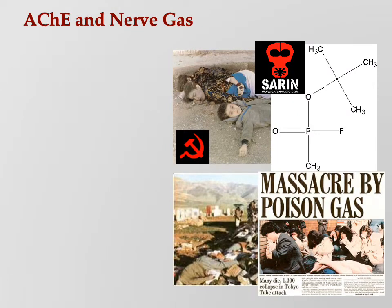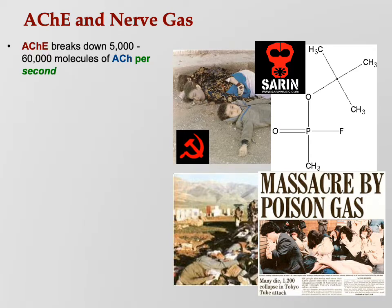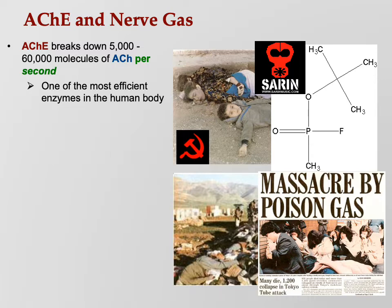We've been talking about the neuromuscular junction. One way to understand how it works is to see what makes it not work. Acetylcholinesterase breaks down 5,000 to 60,000 molecules of acetylcholine per second — it's one of the most efficient enzymes in the human body. The moment acetylcholine gets released from the vesicles of the synaptic knob or terminal bouton, acetylcholinesterase starts breaking them down, because you only want muscle contraction to last a very short amount of time.